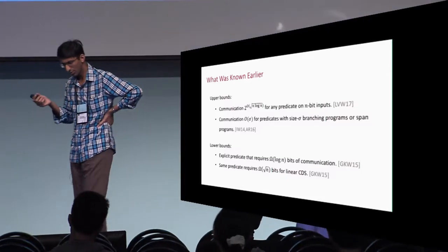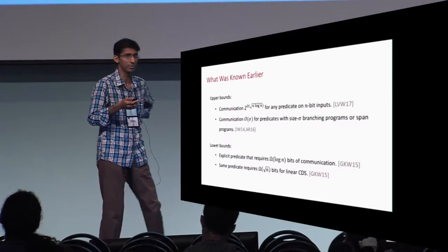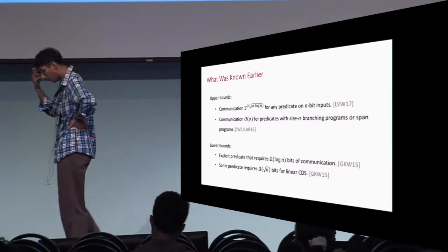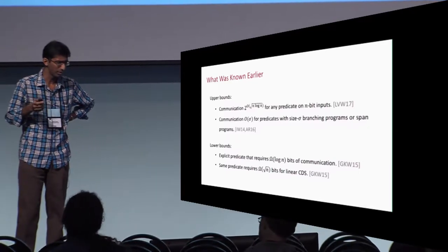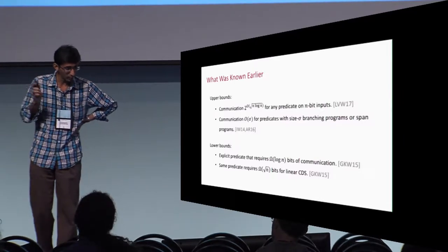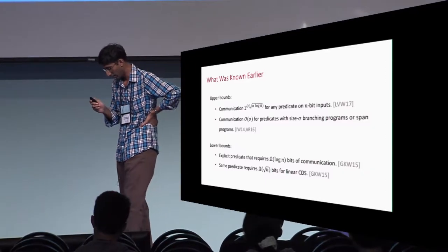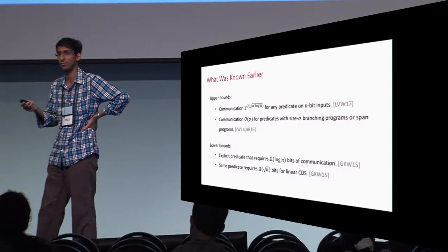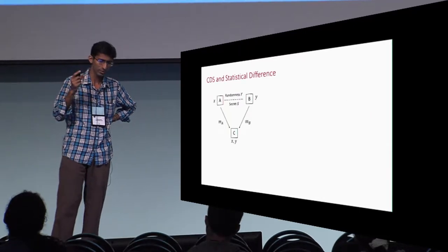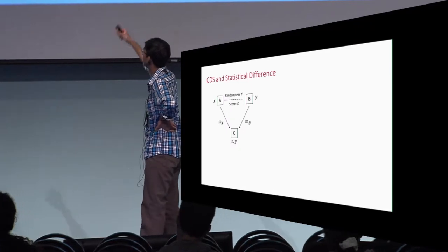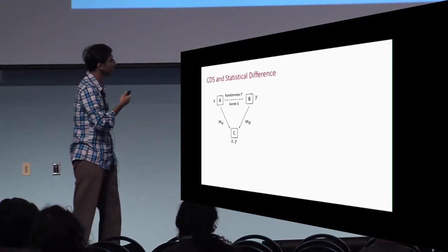In the rest of my talk I'll tell you about some of the results we have — a collection of results about different aspects of CDS, different transformations and lower bounds. I won't be able to go into all of these in detail, but I'll cover one in detail and give some idea of how the others come about. Before I do, I want to present a slightly different view of this problem — a view that actually helped us arrive at many of our results. I want to show how this model relates to the statistical difference problem.